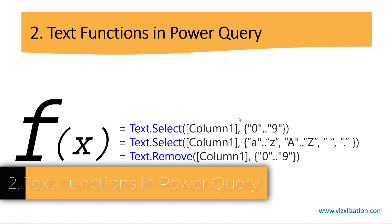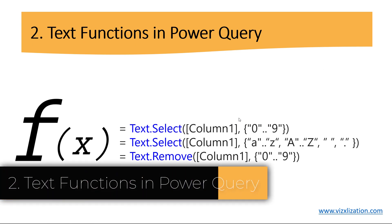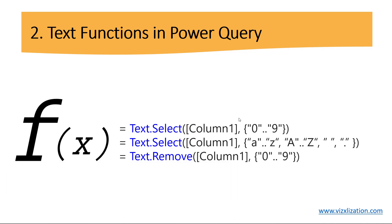Now, text functions in Power Query. We're going to use three different functions. The first is Text.Select — we're saying: please select all characters in the range of 0 to 9. The second function selects all characters in the range A to Z, both lowercase and uppercase, and also any space or period in the text of column 1. The third function is Text.Remove — very similar to the second, but we're saying: please remove all characters in the range 0 to 9 from the text in column 1.